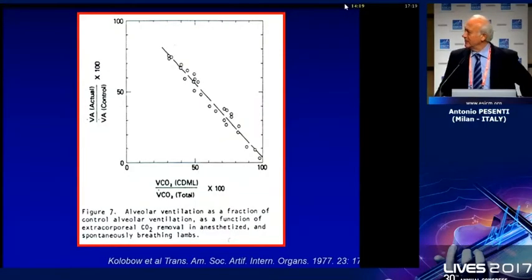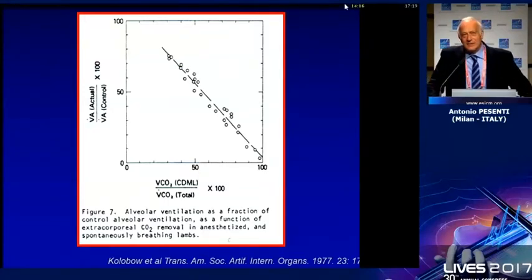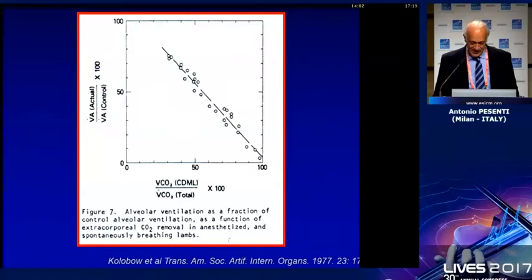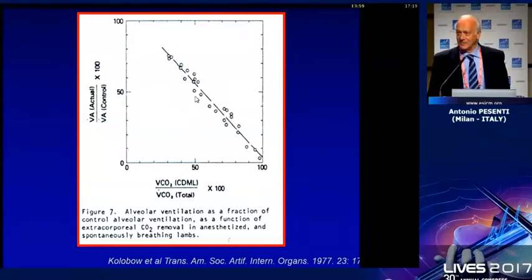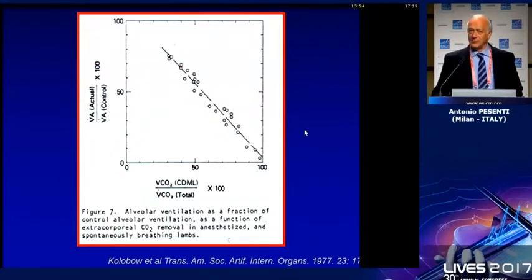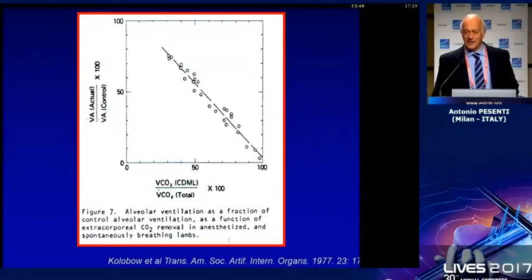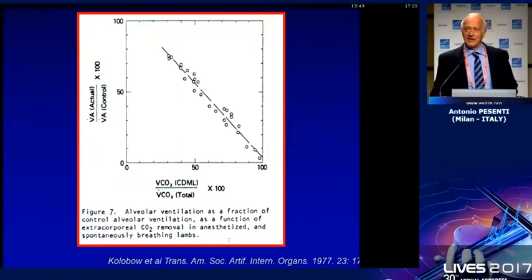He showed, together with Colobo, that mechanical ventilation can be decreased in parallel with the amount of CO2 removed by the membrane lung. With mechanical ventilation, it is really a straight line: the more CO2 you remove, the less you have to ventilate. If you remove the entire CO2 production, you can go to apnea and ventilate your animal at the rate and tidal volume you want.